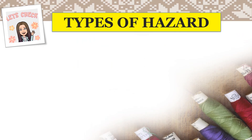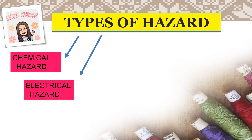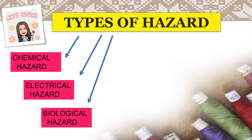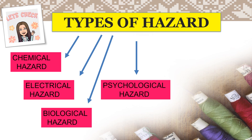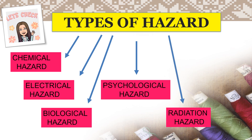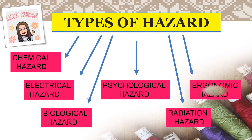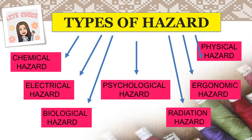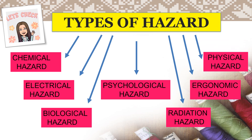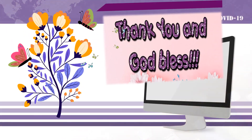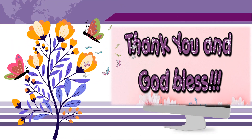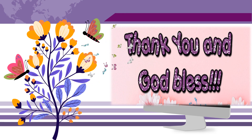Again, what are the types of hazard in a workplace? The types are: chemical hazard, electrical hazard, biological hazard, psychological hazard, radiation hazard, ergonomic hazard, and physical hazard. That's all for today. Thank you so much and God bless everyone. I hope you learned something about Module 5. Keep safe.